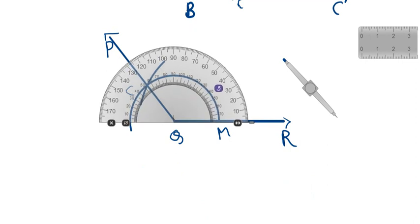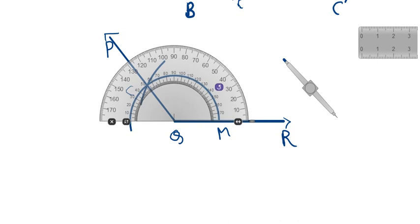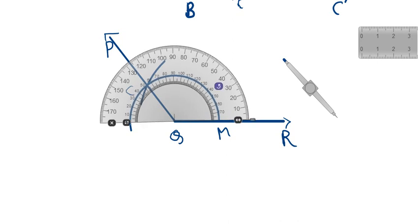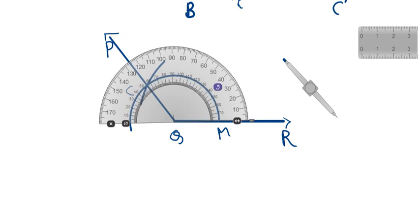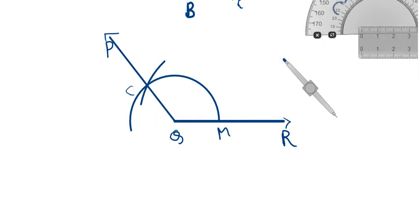Keeping the protractor at point Q, you can see it is 125 degrees. This means angle PQR equals angle ABC, our angles measure equal and the question is solved.